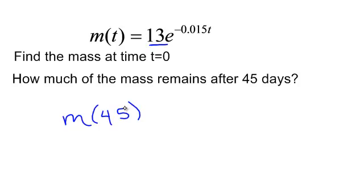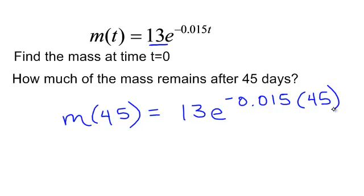So after 45 days, so m(t), that would be m(45 days), it will equal, and some wonderful scientist has figured out this formula, if I started with 13, e to the, and this particular substance decays at this rate, negative 0.015. And my t, I'm going back after 45 days to see how much is left.